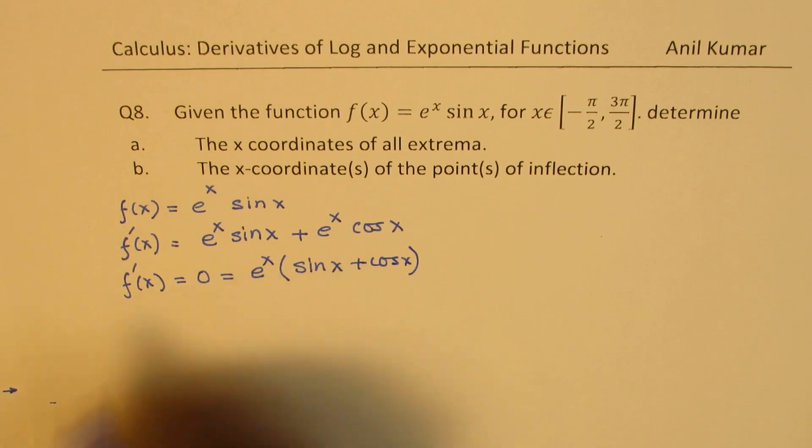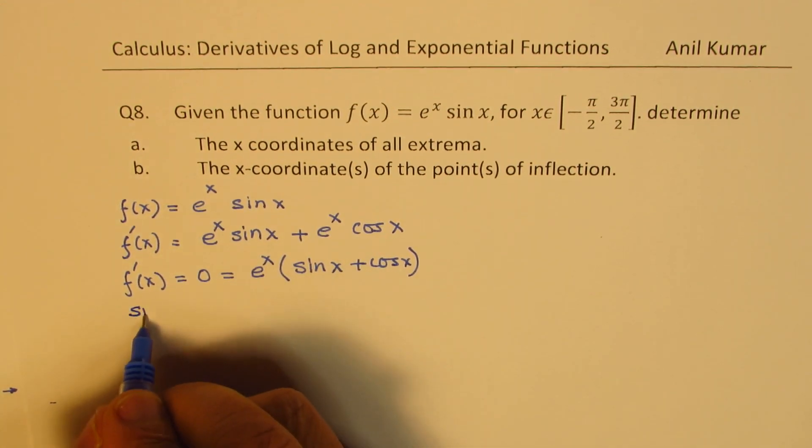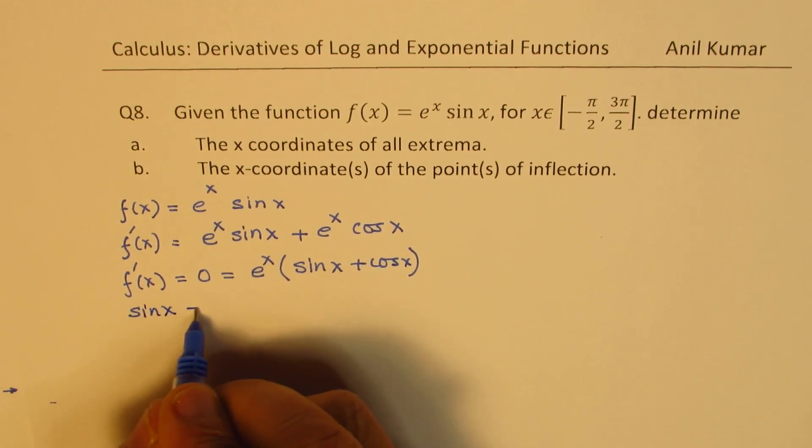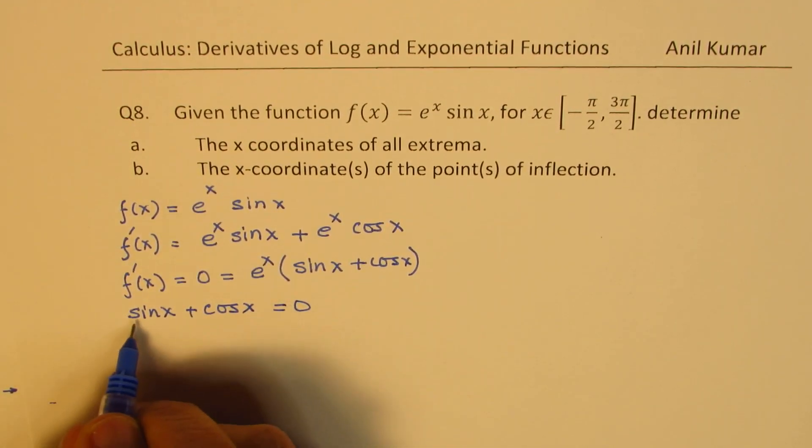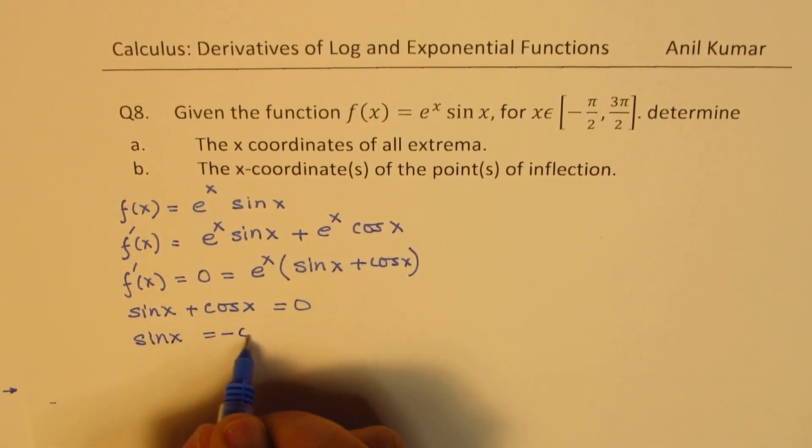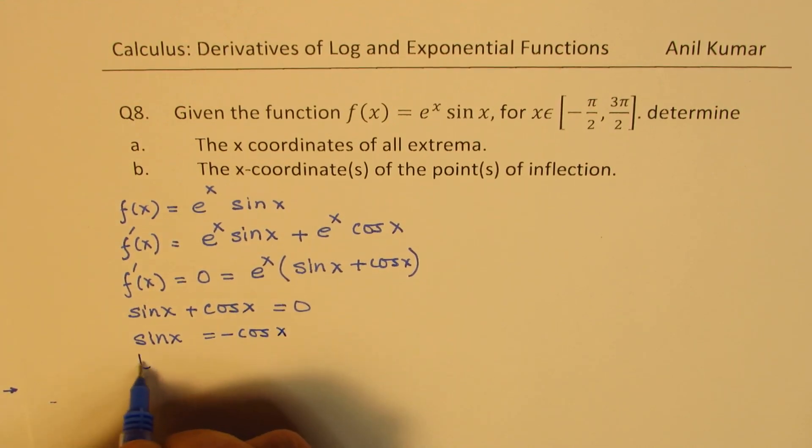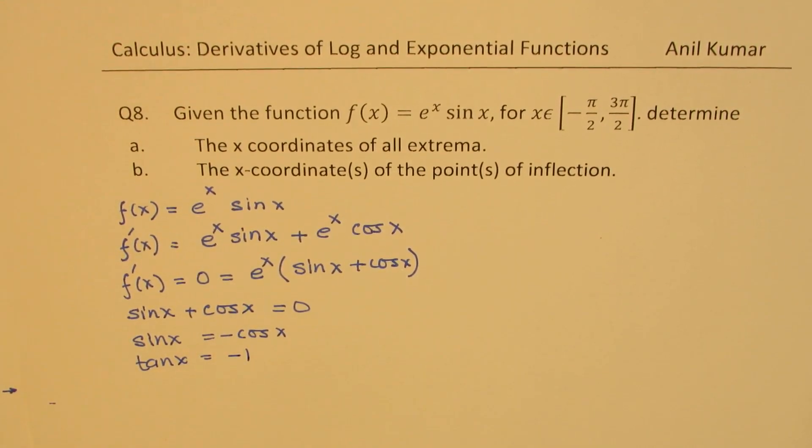And clearly e to the power of x will not give you any root, but sin(x) plus cos(x) will give you a solution. And that gives you sin(x) equals to minus cos(x), or we can say tan(x) equals to minus 1 when you divide by cos(x).